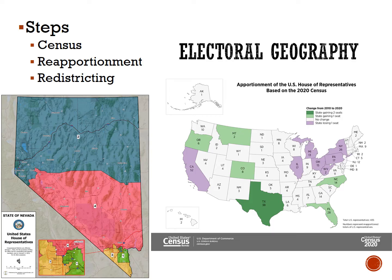But people move and populations change. So how does the House of Representatives take that into account? Every 10 years we have a census, which counts the population of every state throughout the whole country. Then we compare which states grew in population and which states shrank, and we undergo a process called reapportionment. There are 435 seats in the House of Representatives, and those seats are reallocated to the states based on population change. This ensures that each state's population is accurately represented. Most states keep the same number of representatives, but some gain and some lose seats.